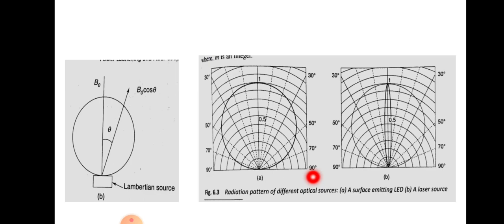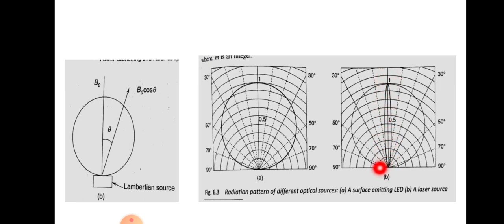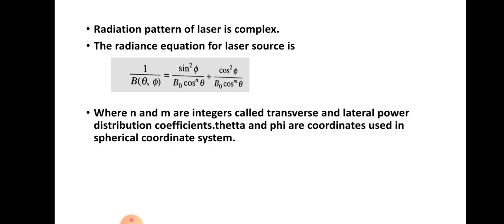If a source is placed here, radiations will be going in this manner. For the case of a laser, the radiation pattern will be like this — in the case of laser it produces highly directional light compared to the LED. This is the radiation pattern of laser, and this is the radiation pattern of LED. The radiation pattern of laser is complex because it is very highly directional.